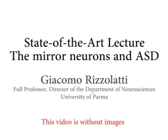Some years ago, as probably many of you know, we discovered a specific set of neurons which fire both when the monkey performs an action and when the monkey observes a similar action made by another individual. We call these mirror neurons. Later on, we and other people discovered this type of neurons in many species and in several areas.